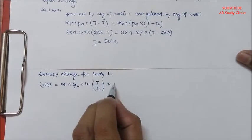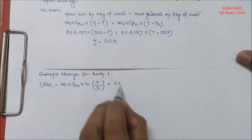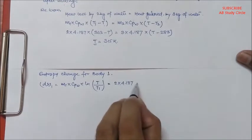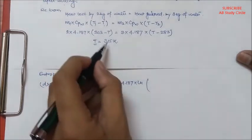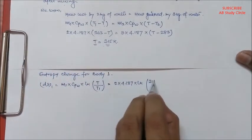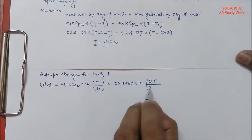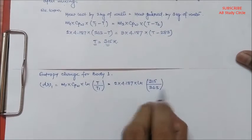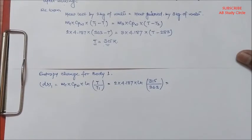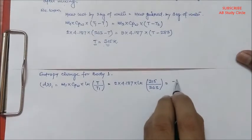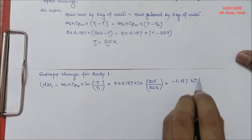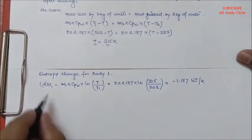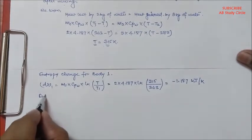And it will come as -1.187 kJ per Kelvin. So let's find out entropy change for body 2.